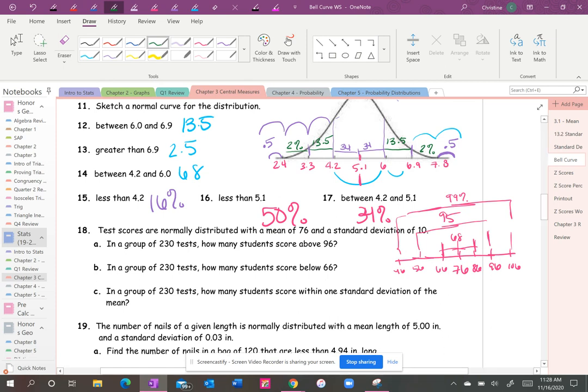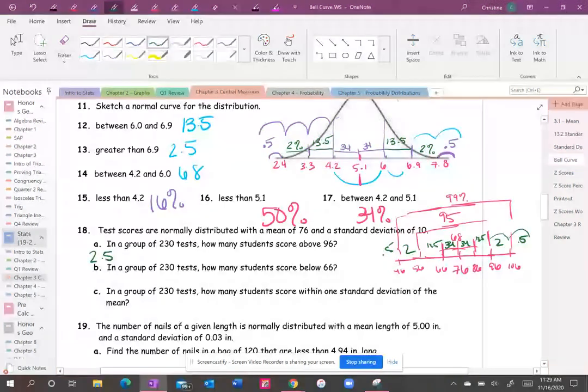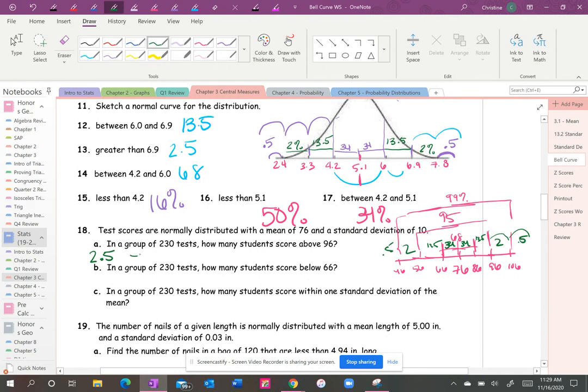Okay, so it says in a group of 230 tests, how many students score above a 96. So 96, let's do the other percentages real quick: 34, 34, 13.5, 13.5, 2, 2, and then on the outskirts are 0.5 and 0.5. So how many students score above a 96? Well, it's 2.5 percent of students, but it doesn't want to know what percentage, it wants to know how many. So if there's 230 tests, 2.5 percent is 5.75.